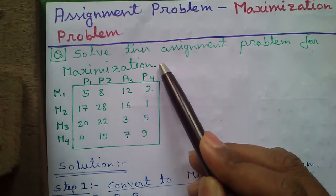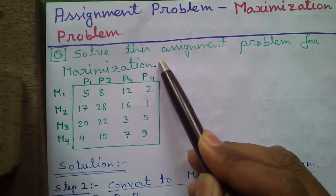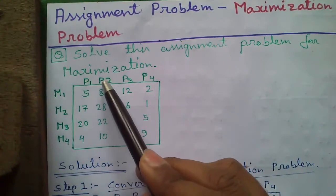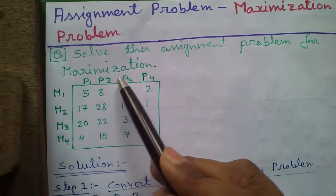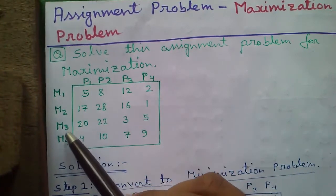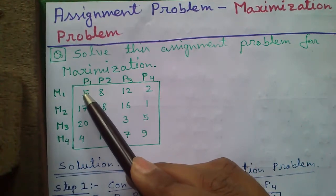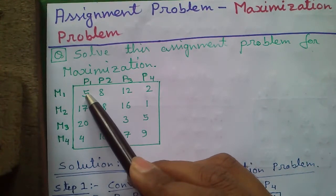Assignment problems are generally of minimization type but in some cases they may also be of maximization type. For example, in profit maximization or revenue maximization. Here we have 4 persons P1, P2, P3 and P4 and 4 machines M1, M2, M3 and M4. These values represent the cost of assignment or cost of allocation.